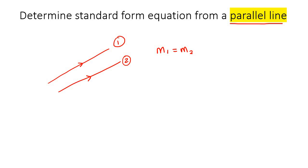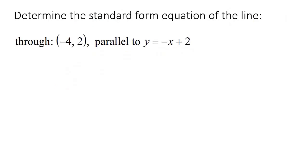We've done this already in slope-intercept form. Now we're just going to learn how to do it in standard form. So here is our first example. It says, determine the standard form equation of a line that goes through this point, and it's parallel to this line over here.